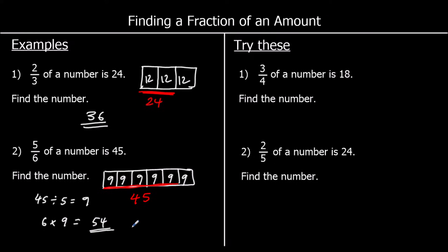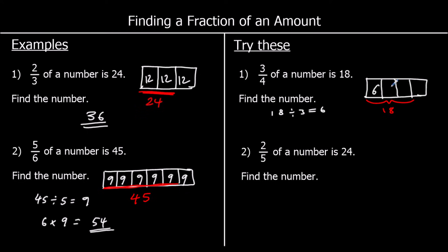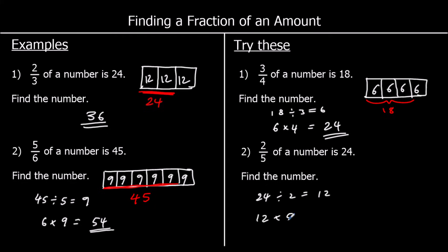Two of these for you to try. For the first one, three quarters of a number is 18. So three of these bits are worth 18. If we divide by three, 18 divided by three is six, so each bit must be worth six. And we've got four sixes, which is 24. So the total number must be 24. For the last one, two fifths of a number is 24. So it's split into five bits, two of them are worth 24. 24 divided by two is 12, so each bit is worth 12. So 12 times five is 60 — the total number is 60.